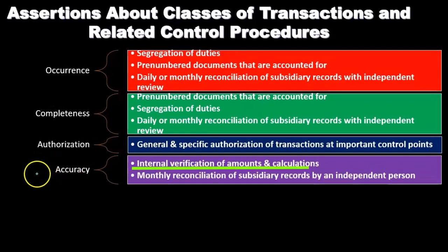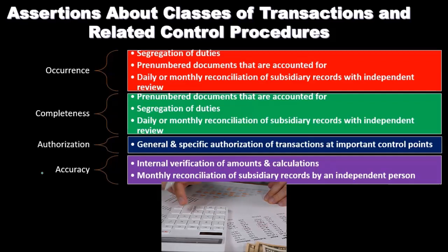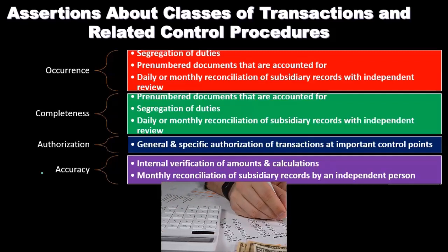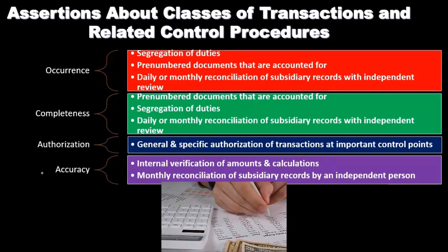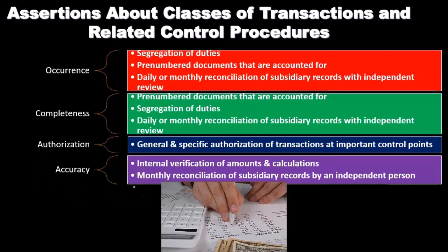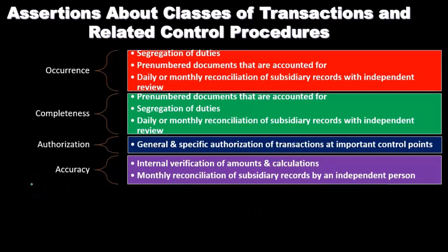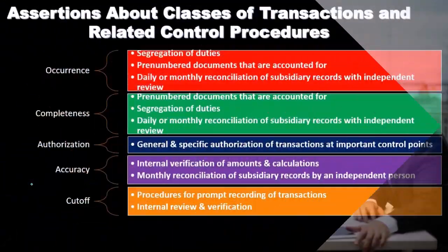For accuracy, we have internal verification of amounts and calculations, and monthly reconciliation of subsidiary records by independent persons. We want to verify different types of calculations, especially ones that might be more unusual — things like calculating the allowance for doubtful accounts or depreciation. Monthly reconciliation of subsidiary records by an independent person will also help with accuracy, ensuring that subsidiary ledgers for accounts receivable, accounts payable, and inventory tie out to the primary accounts.